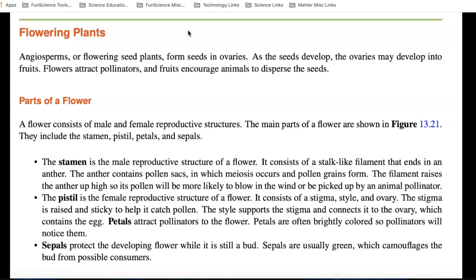Very important is we're going to take a look at the parts of a flower. The stamen is the male reproductive part of the flower. The pistil is the female reproductive part of the flower. And the sepals protect the developing flower while it's still in bud. So, let's take a look at a diagram.